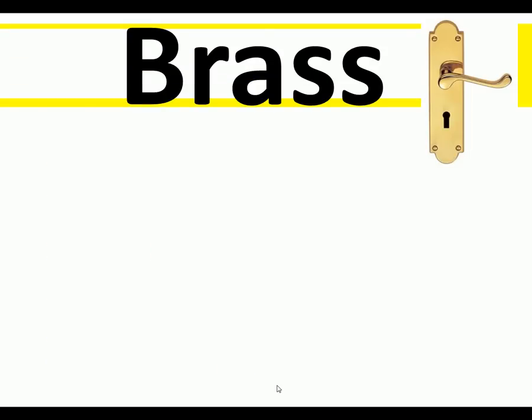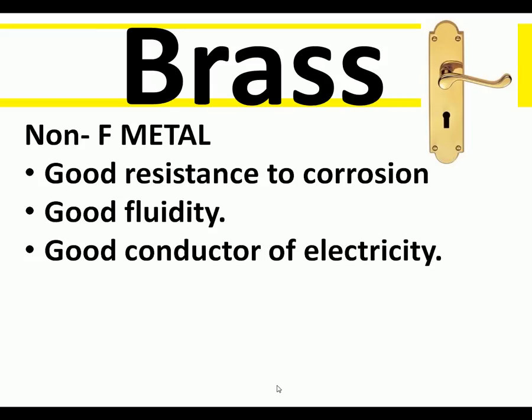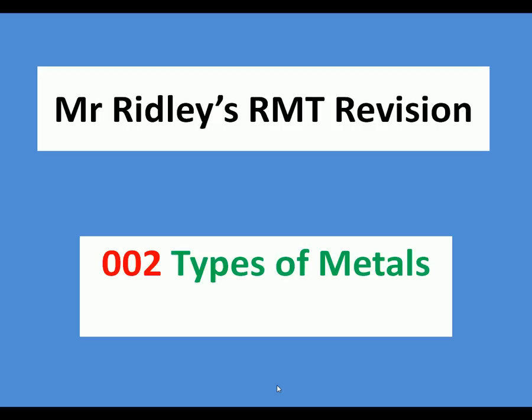Finally, brass is a non-ferrous metal with good corrosion resistance. It is easily cast, a good conductor of electricity, and can be polished. It is relatively expensive and comes in different grades for different applications. An example of brass in use would be fittings added onto a product.